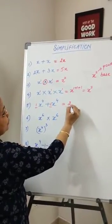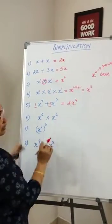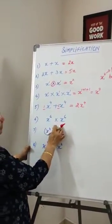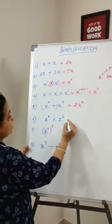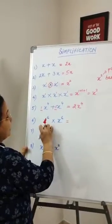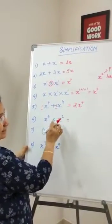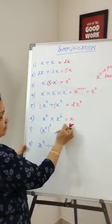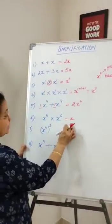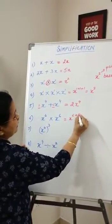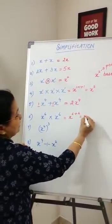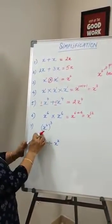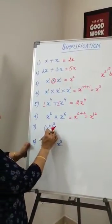x power 4 plus x power 4 — there is only one number, so no need to add the powers. The answer is 2x power 4. x power 6 multiplied by x power 6 — the base is the same, so we add the powers and the answer is x power 12.